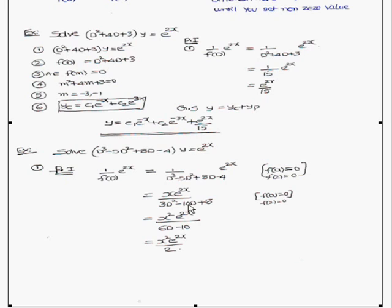We multiply the numerator by x again, giving x²·e^(2x), and differentiate the denominator once more: d/dD(3D² - 10D + 8) = 6D - 10. Substituting a = 2: 6(2) - 10 = 12 - 10 = 2. This is non-zero, so the particular integral is yp = x²e^(2x) / 2.